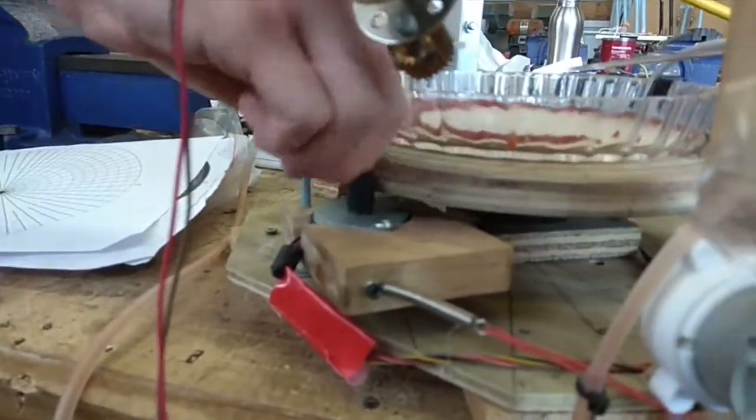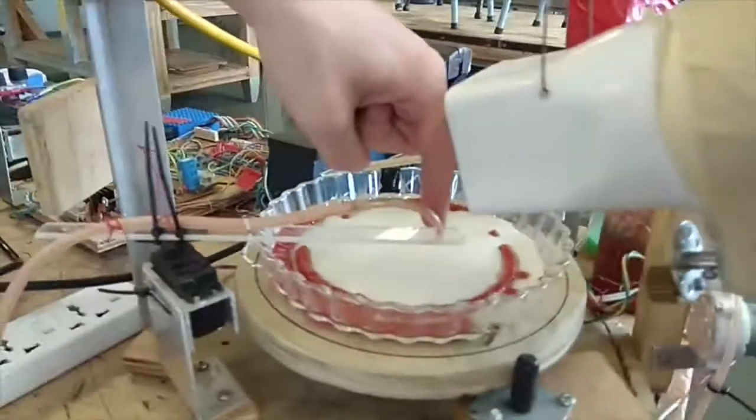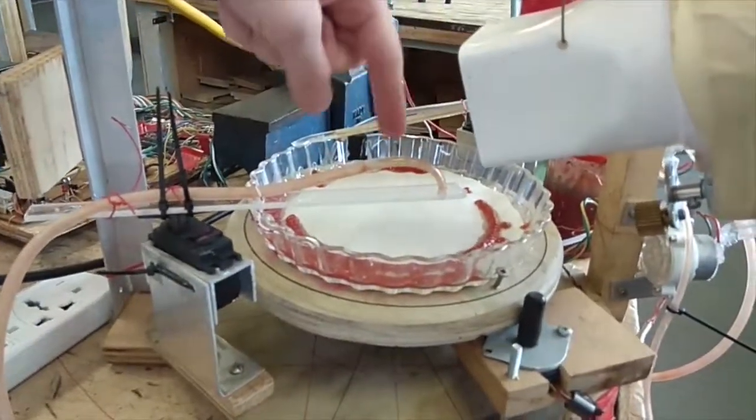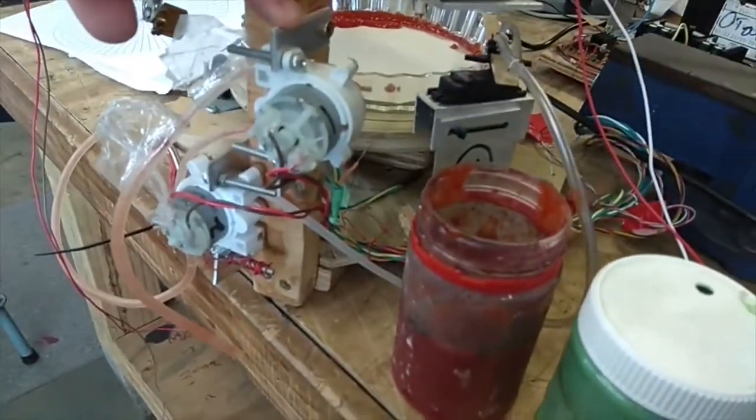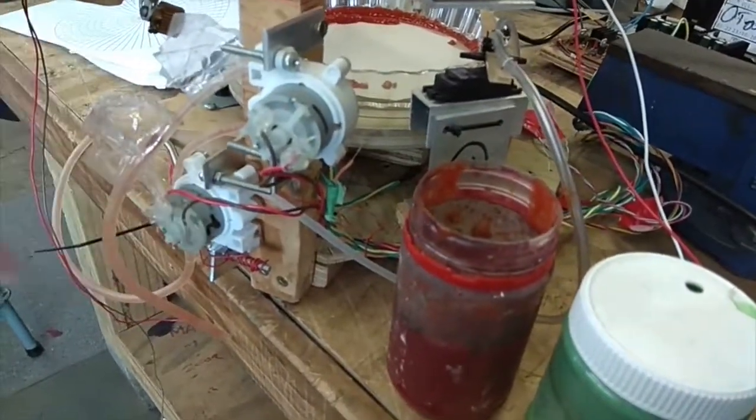And then using this motor here we can turn the entire base. And then when the head, where the source comes out, is over where we want to paint a pixel, we can turn on one of these two pumps here, one for each source. So the top one's tomato at the moment, bottom one's probably barbecue sauce. Nice.